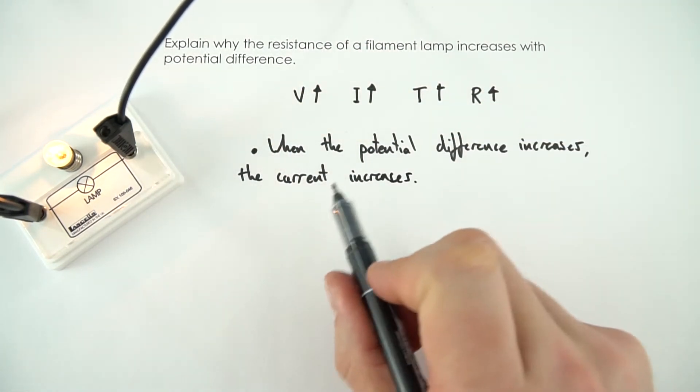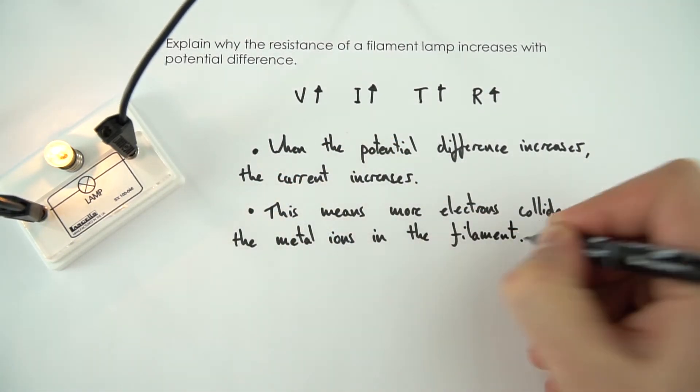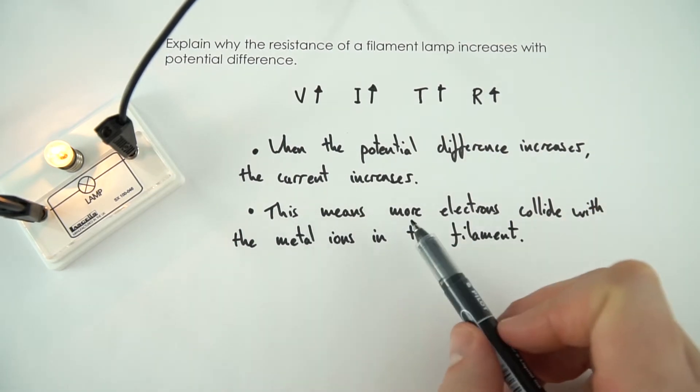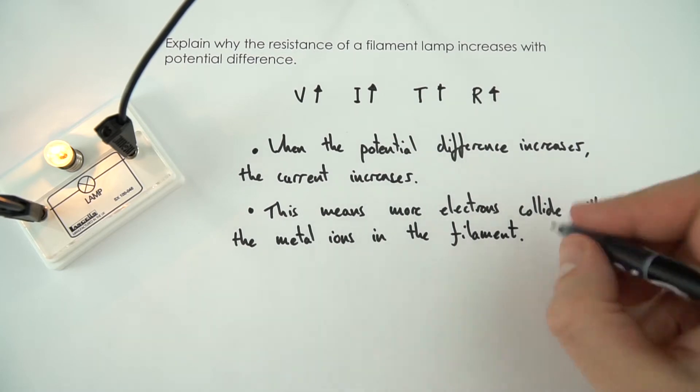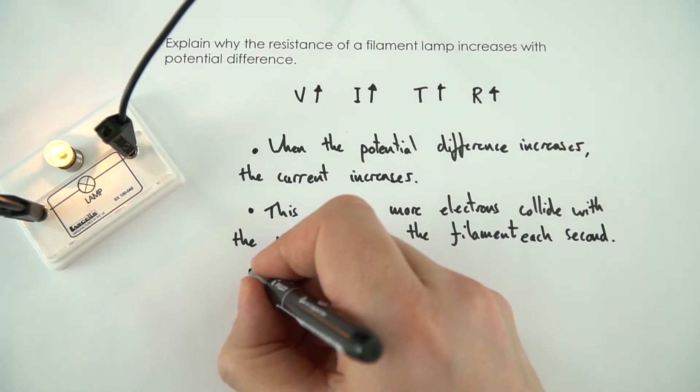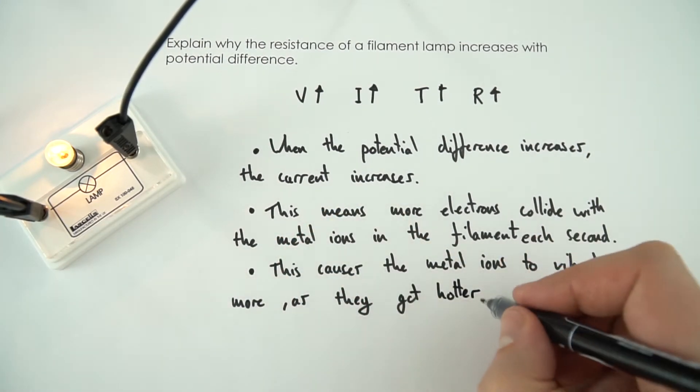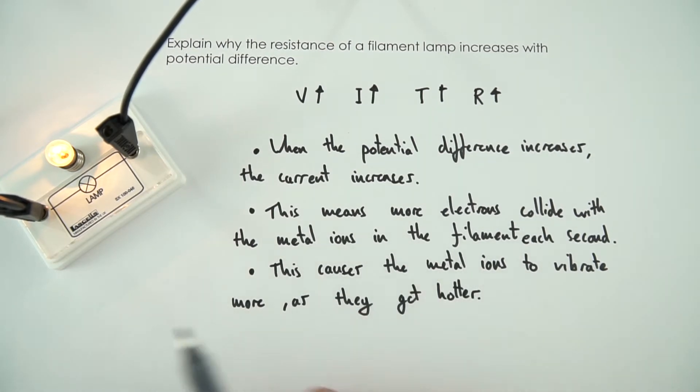So first of all, when the potential difference increases, the current increases. And this then means that more electrons collide with the metal ions in the filament, and I guess I should probably say each second. And this in turn causes the metal ions to vibrate more as they get hotter.